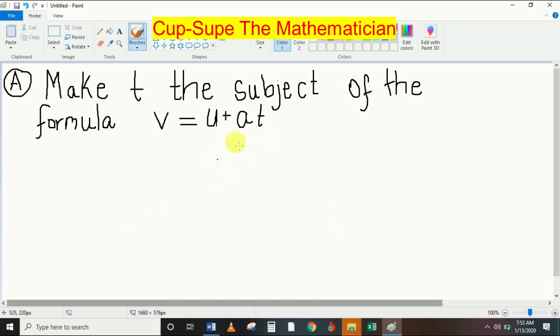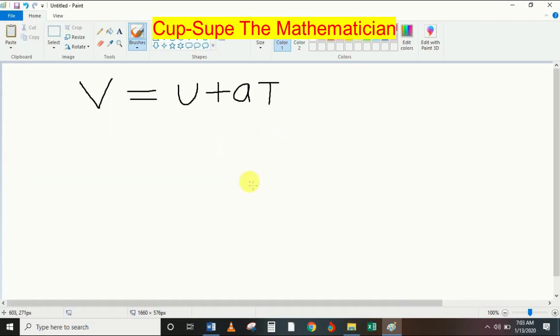So this is the first question: V equals U plus AT. I'm going to make T the subject of the formula.